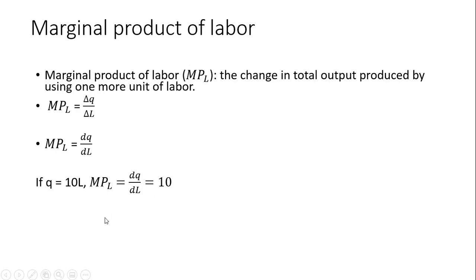Every time we use one more worker, output rises by 10 units. So if we go from one to two workers, output goes from 10 to 20. When we go from two to three workers, total output goes from 20 to 30 — another 10-unit increase. So every time we use one more worker with this production function, the marginal product is 10 and output always increases by 10.